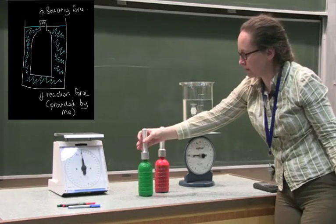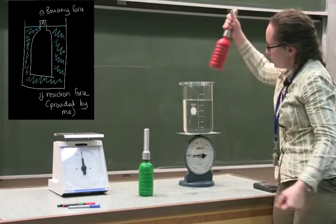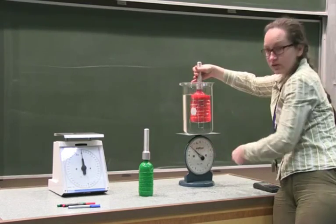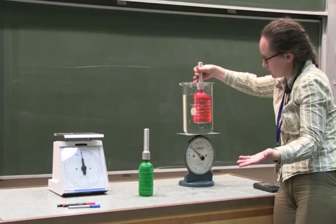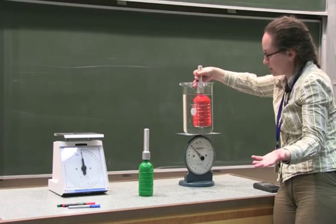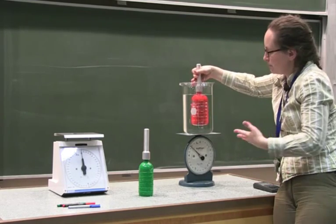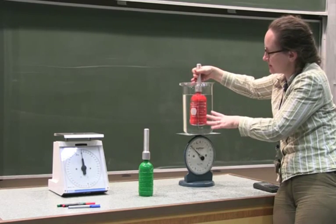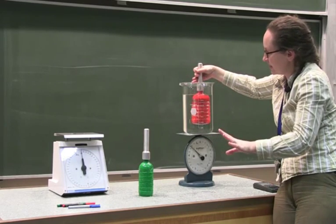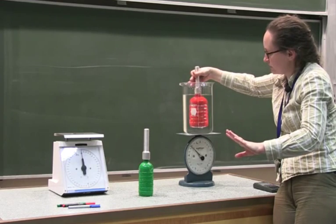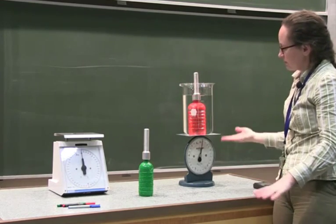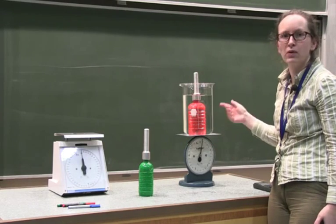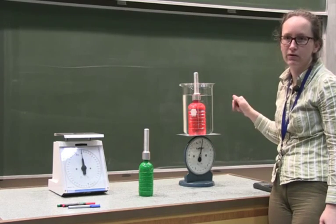With the red bottle, we get the same reading on the scales — it also changes by approximately 600 grams because we have the same volume of water displaced. It doesn't matter about the different densities. If we let go of the handle, the reading goes up a lot because we've added the extra weight force from the red bottle itself.